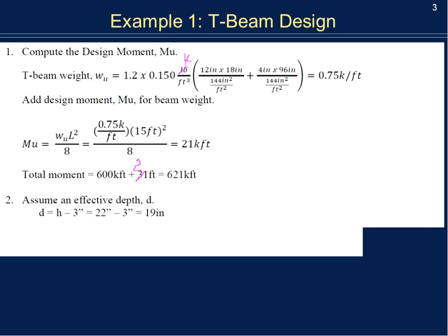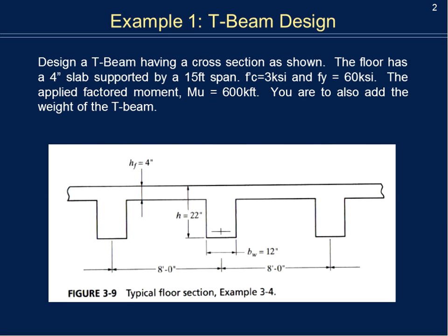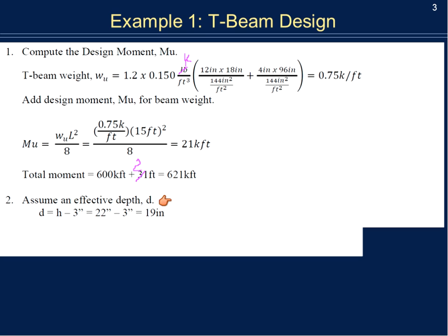Since this is a design problem, we don't know the rebar size yet. We'll assume the effective depth for the entire T-beam is the total depth of 22 inches minus an estimate of 3 inches. That 3 inches covers 1.5 inches of cover, plus the stirrup diameter (assumed #3), plus half the diameter of a rebar. So our estimated effective depth is 19 inches.